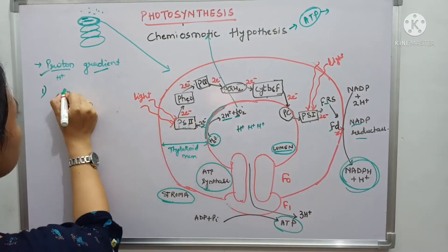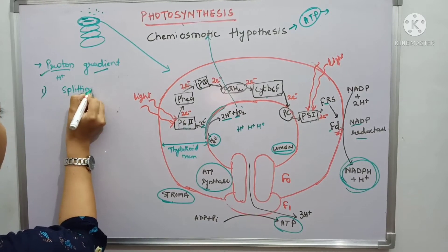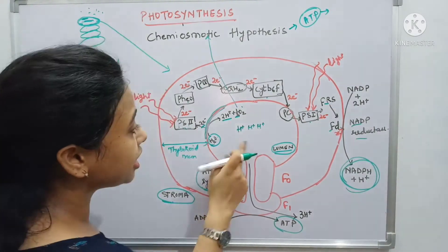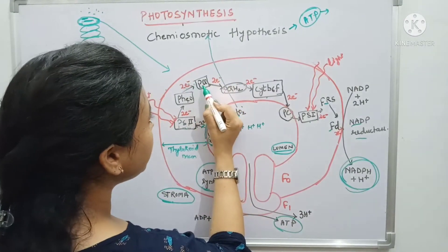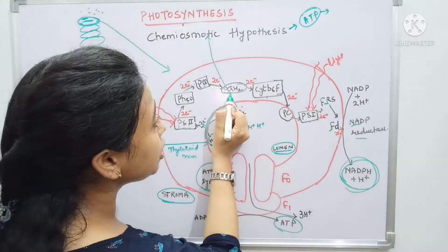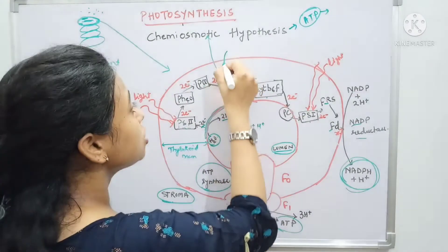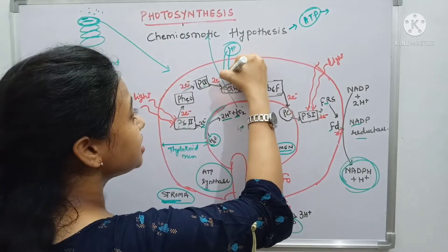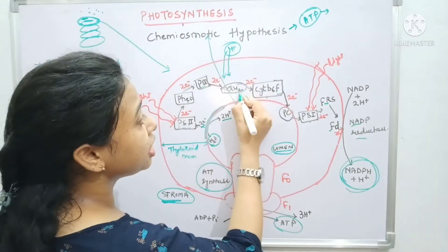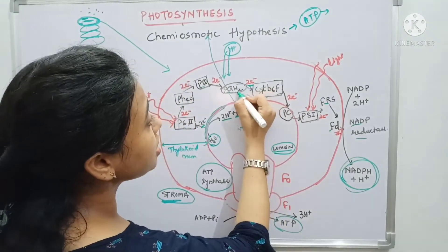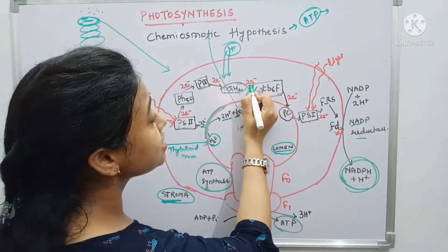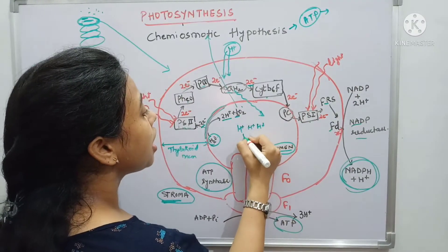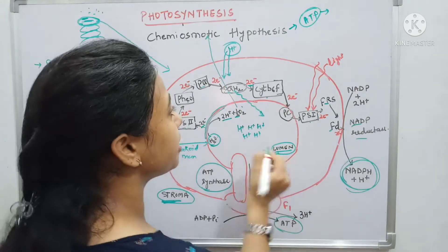The first reason for proton gradient formation is the splitting of water. The second reason involves plastoquinone. Plastoquinone takes up electrons and gets reduced to PQH2 — for this reduction, hydrogen is taken from the stromal region. When it releases the electron again to cytochrome, this hydrogen must be removed, and it is released inside the lumen.